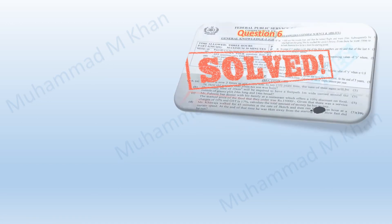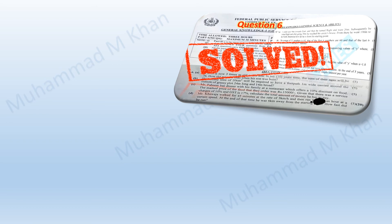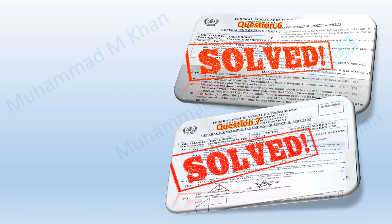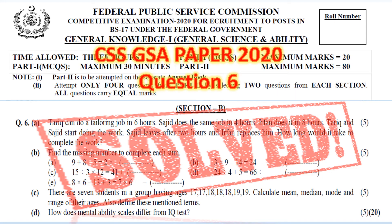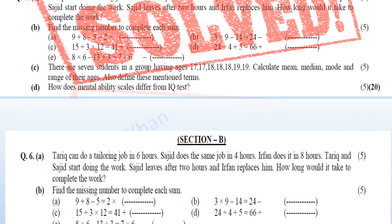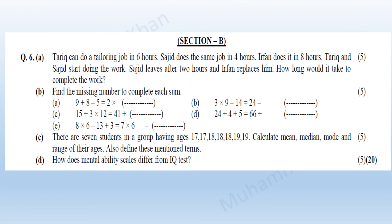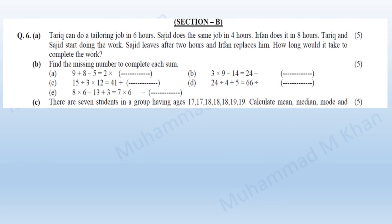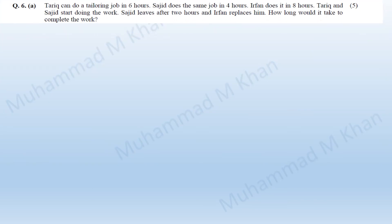In my previous videos I presented the solutions to the General Science and Ability portion of the CSS paper 2021. In this video I will present solutions to the GSA paper 2020, Section B, Question 6, related to the general ability portion. Let me start with Part A of Question 6.